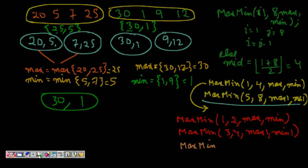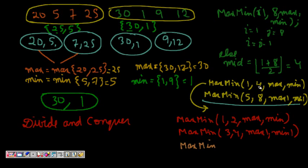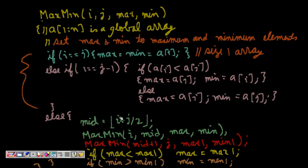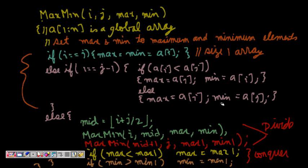To summarize, we used the concept of divide and conquer. We first divided the problem recursively using max-min, splitting into two equal sub-problems. When we reached the base cases, we combined the results — the recursive splitting was the 'divide' step, and merging the sub-results was the 'conquer' step.